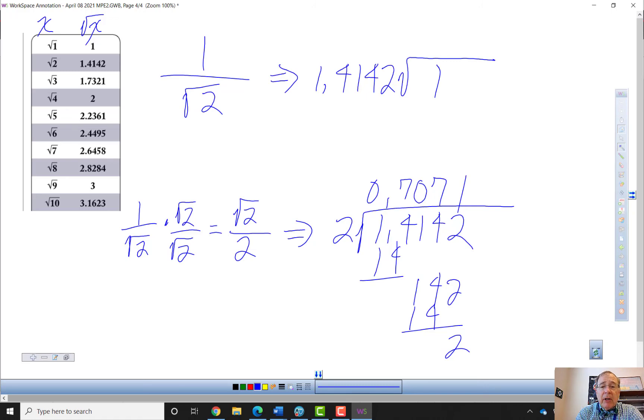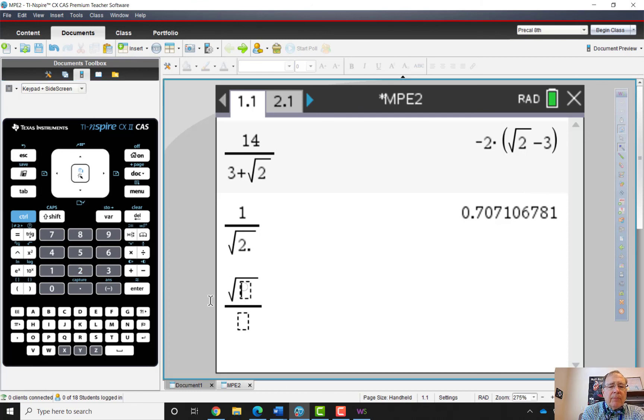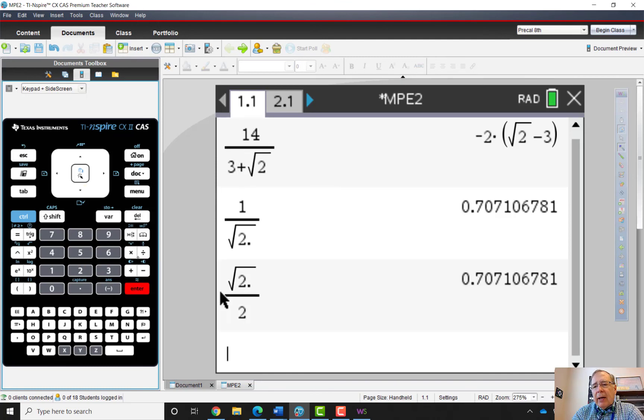So if we go to the calculator and we do one divided by the square root of two, put in a decimal point to ask for an approximation to four decimal places, that's what you get. And if you do the square root of two divided by two, you get exactly the same decimal.